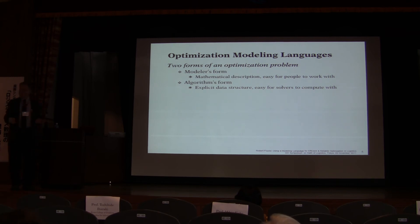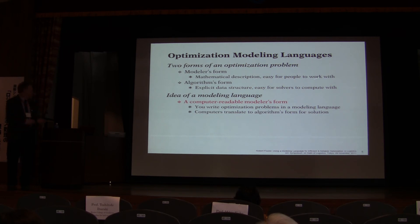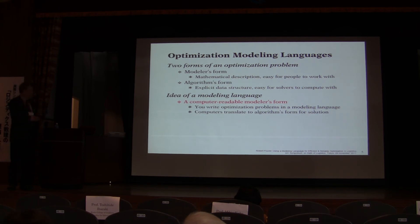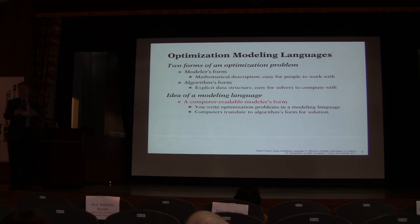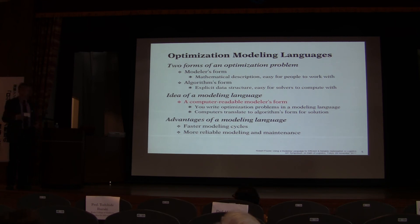Optimization problems really have two very different forms. The algebraic form is how people think about a model — you can explain it, understand it, and make changes. But the form that fast algorithms need is very different: lists of coefficients and sparse arrays of numbers. The idea of a modeling language is to bridge these two forms automatically, so you can work in something that looks like what you understand while the computer translates it.